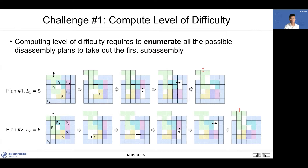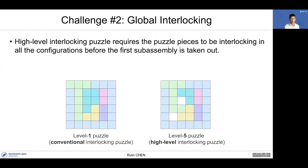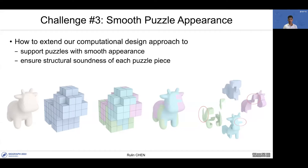Designing a high-level interlocking puzzle is challenging. The first challenge is how to compute the level of difficulty, which requires enumerating all possible disassembly plans to take out the first subassembly. The second challenge is ensuring global interlocking — the puzzle pieces must be interlocking in all configurations before the first subassembly is taken out. The third challenge is how to support puzzles with smooth appearance while ensuring structural soundness of each piece. A simple CSG intersection between the smooth appearance and voxelized shape can lead to structurally weak parts.